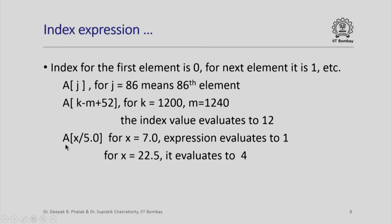I may even say a[x/5.0] is actually a floating point expression. If x is 7.0, the expression evaluates to 1 because the result is always converted to an integer value. Similarly, for x equal to 22.5, it will evaluate to 4. Of course, it does not make sense to use floating point expression in index expression.